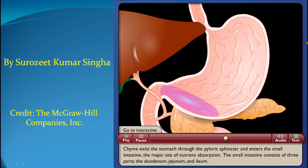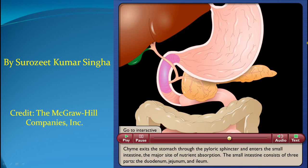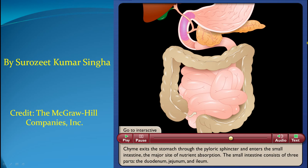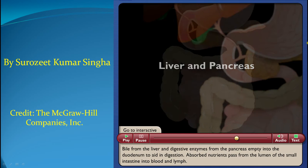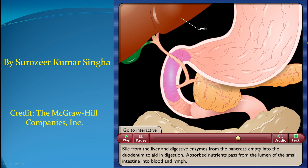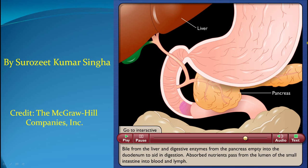Chyme exits the stomach through the pyloric sphincter and enters the small intestine, the major site of nutrient absorption. The small intestine consists of three parts: the duodenum, jejunum, and ileum. Bile from the liver and digestive enzymes from the pancreas empty into the duodenum to aid in digestion. Absorbed nutrients pass from the lumen of the small intestine into blood and lymph.